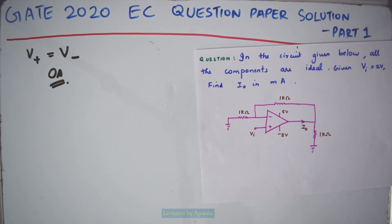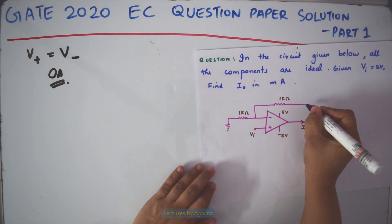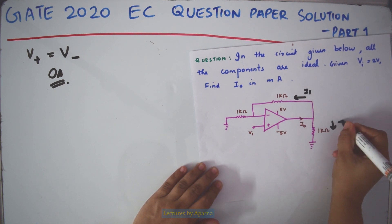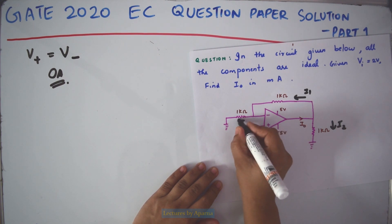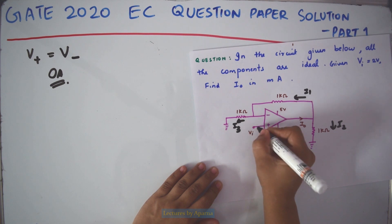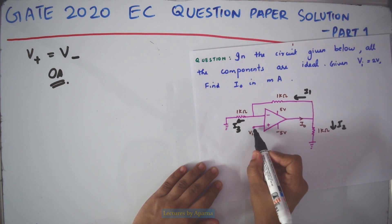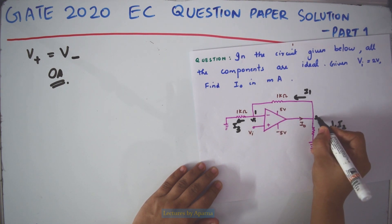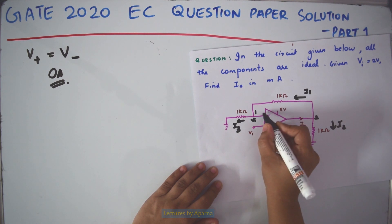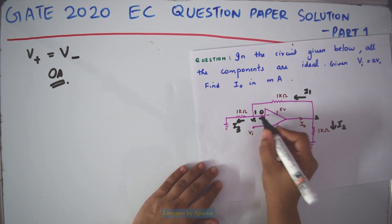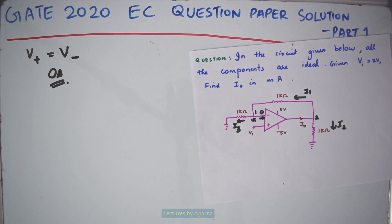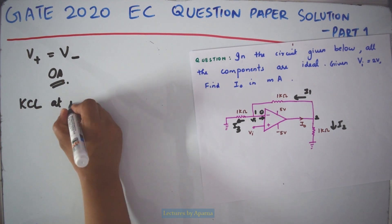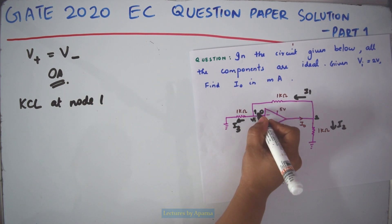I am considering current through the 1 kilo-ohm resistor — let it be I1. Let this current be I2, and let this current be I3. The voltage at the non-inverting terminal will be VI. Let this be node 1 and let this be node 2. The current flowing into the OPAMP is 0 amperes. Now I have to apply KCL — Kirchhoff's current law — at node 1.